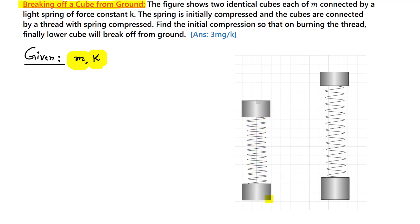The system is initially compressed and connected by a thread. When the thread is burnt, we have to find the minimum compression in this spring so that the lower cube just breaks off from the ground — meaning it leaves with zero velocity.